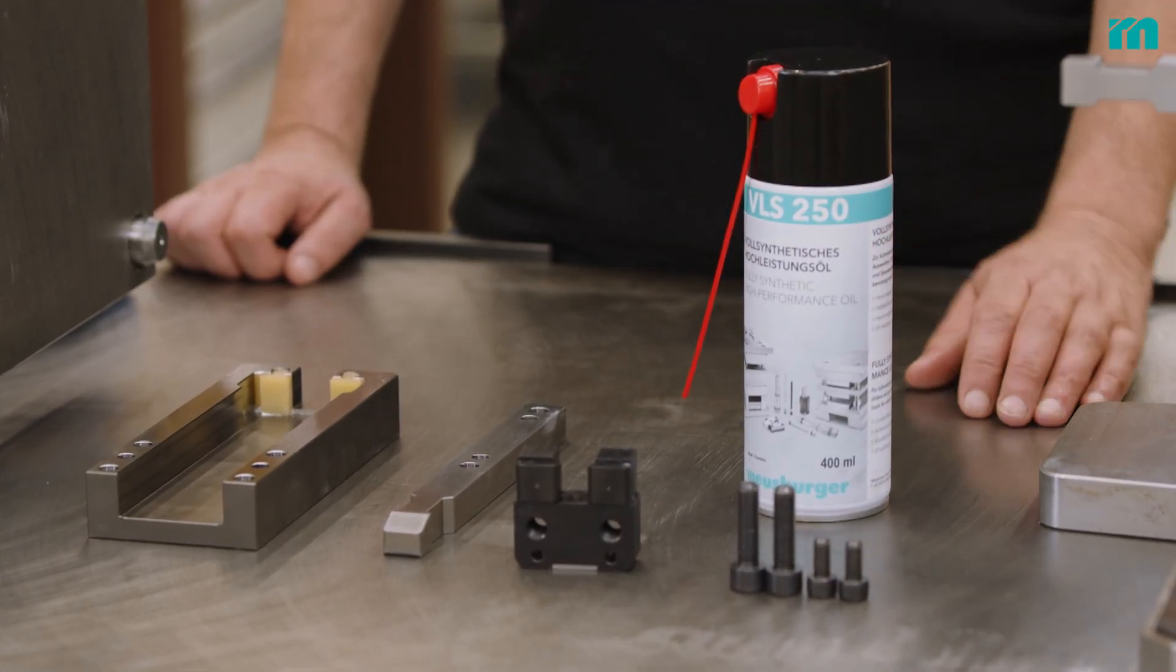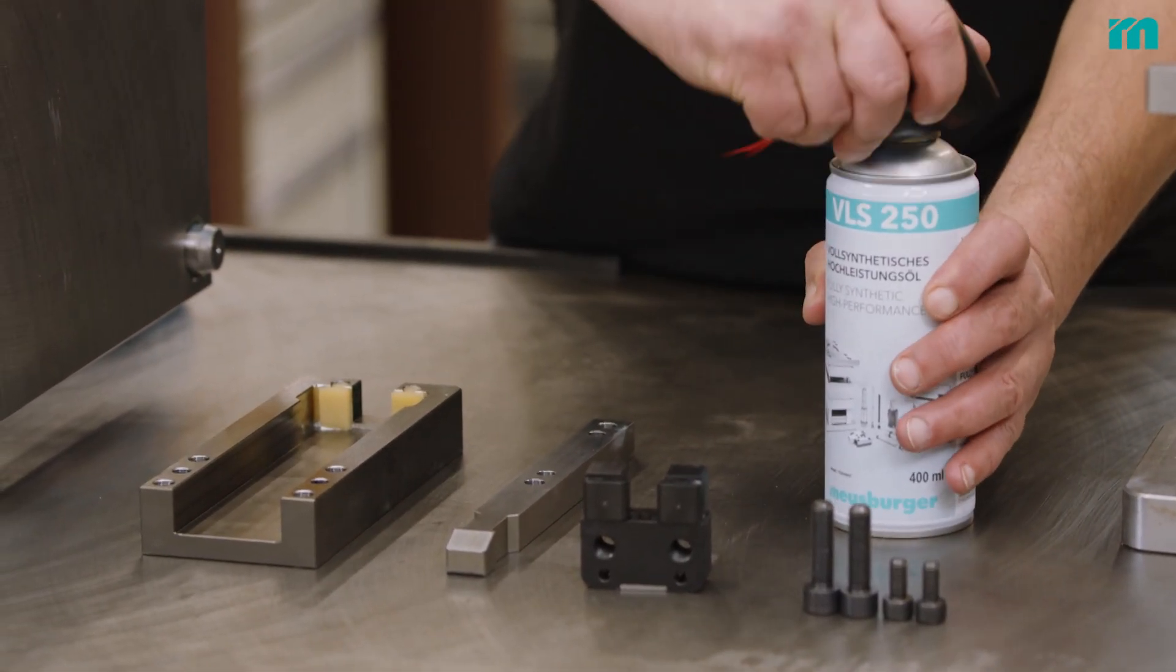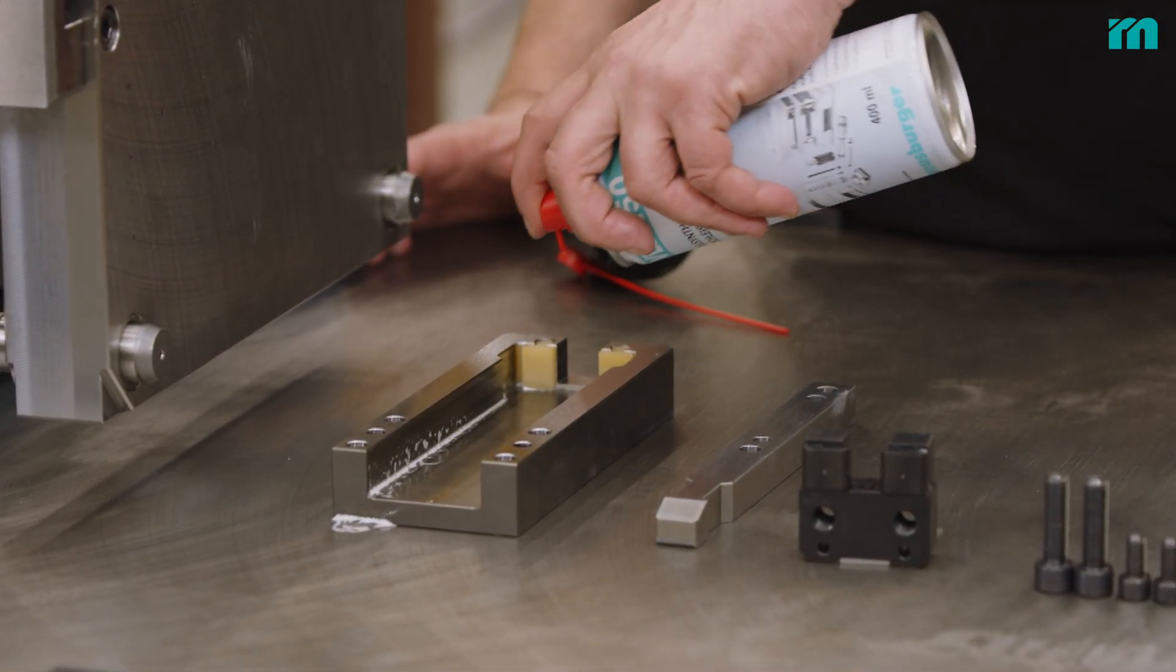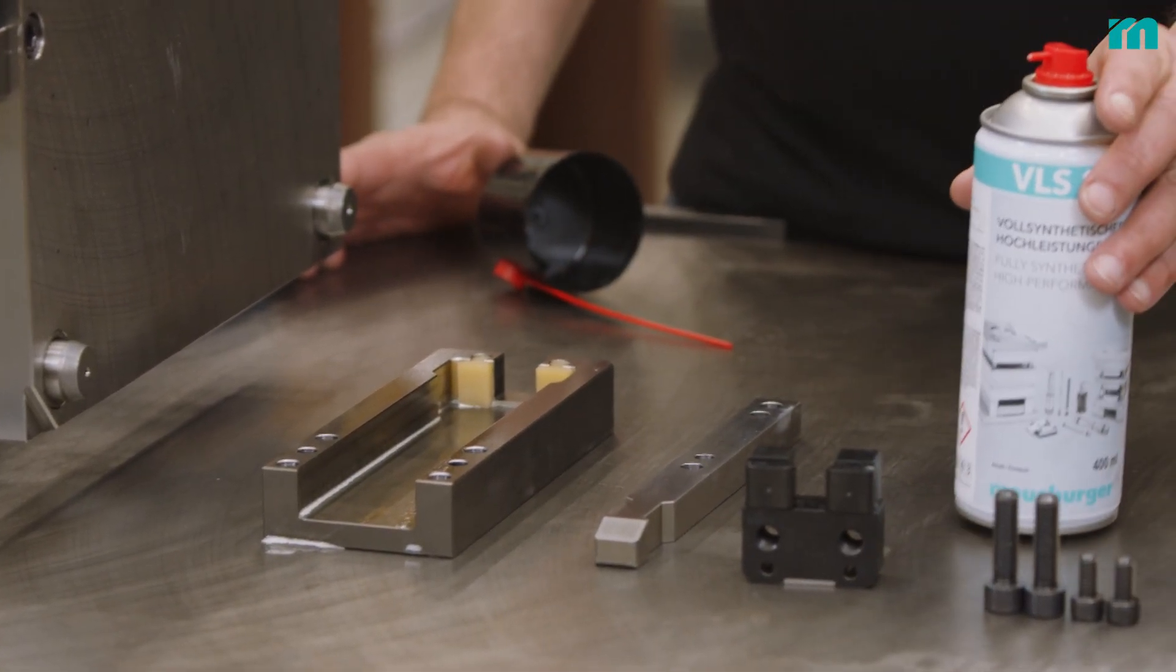In general, we recommend lubricating the contact surfaces with the VLS 250 high-performance oil every 250 hours of operation.